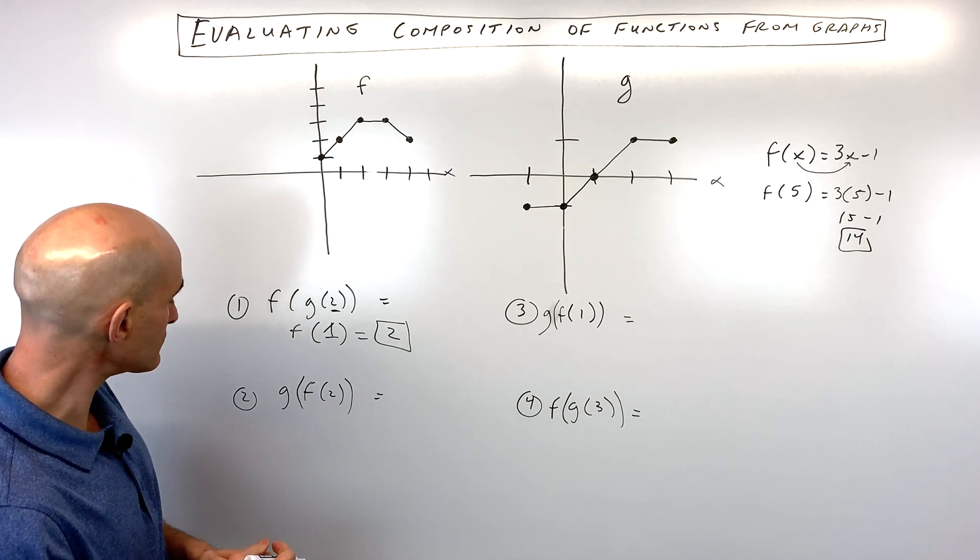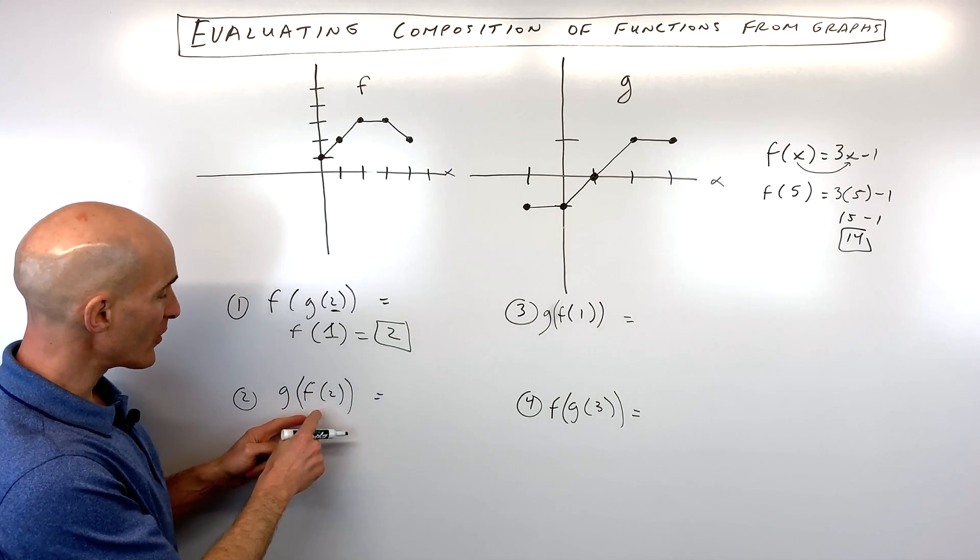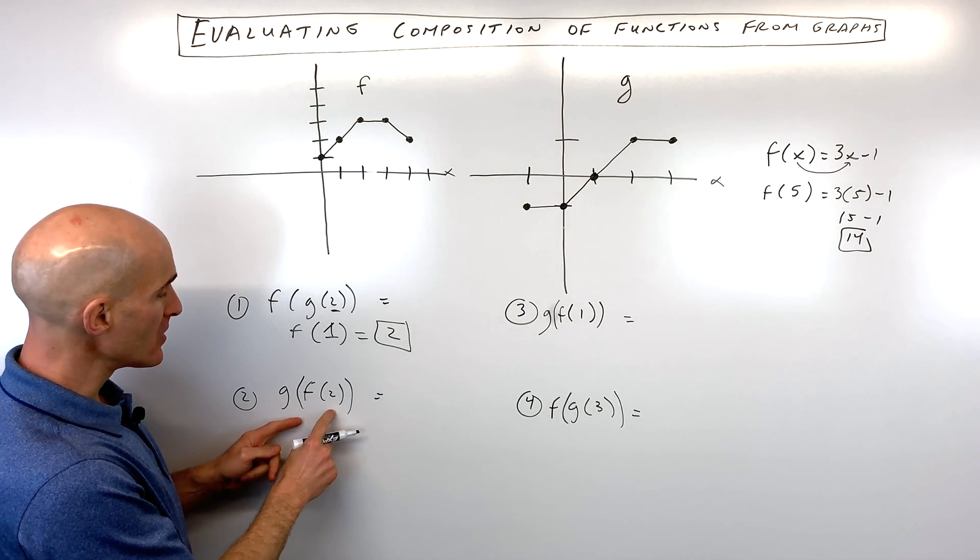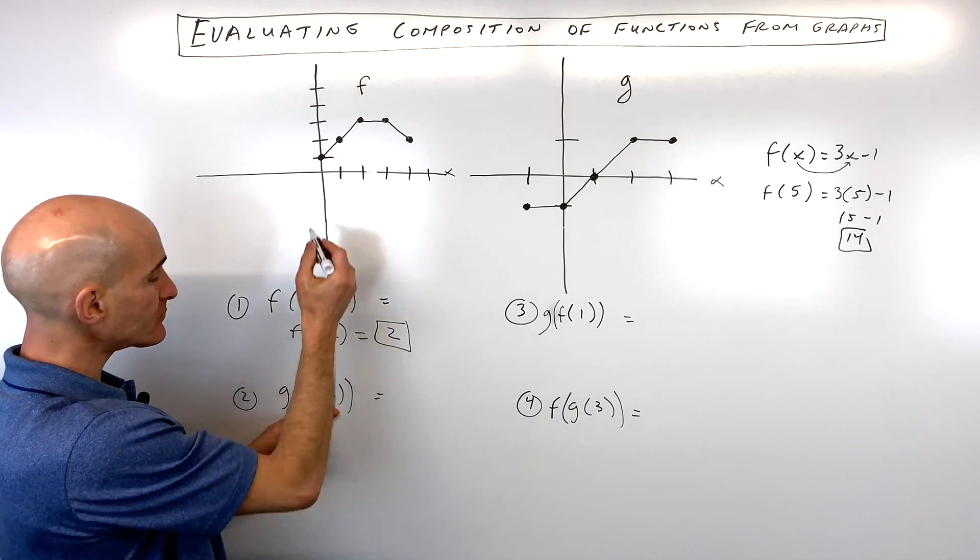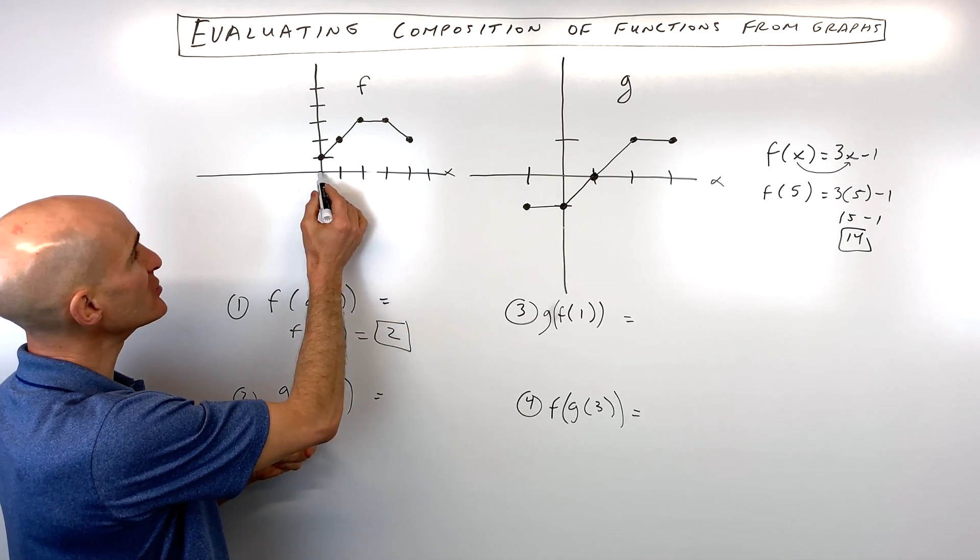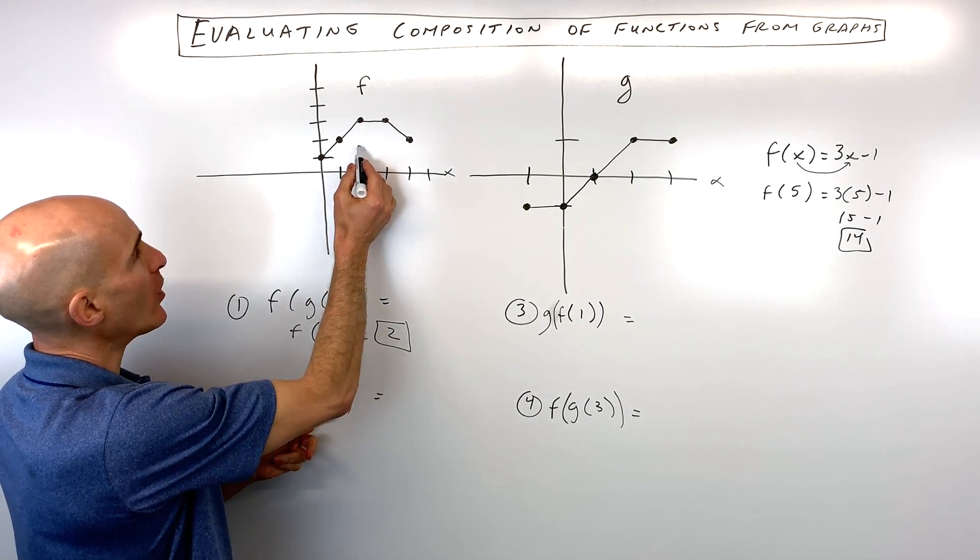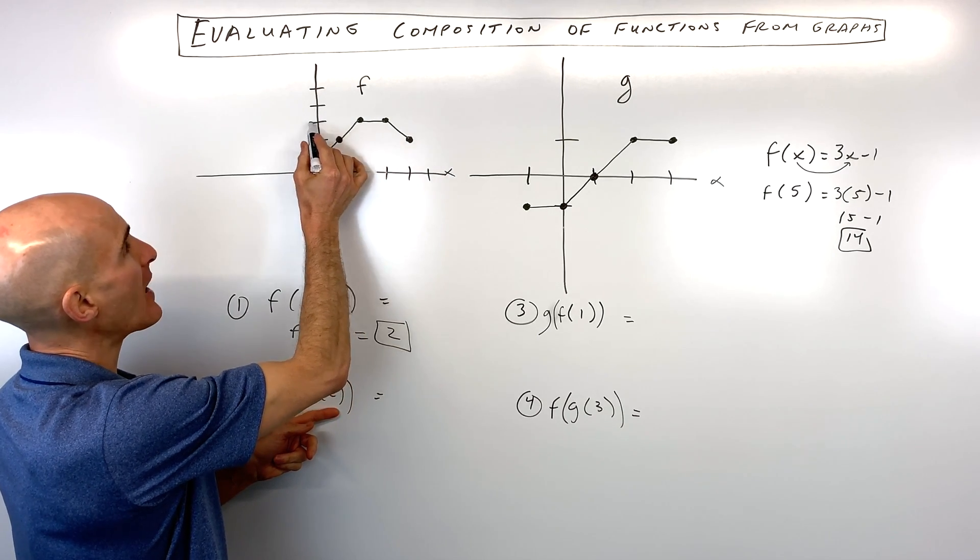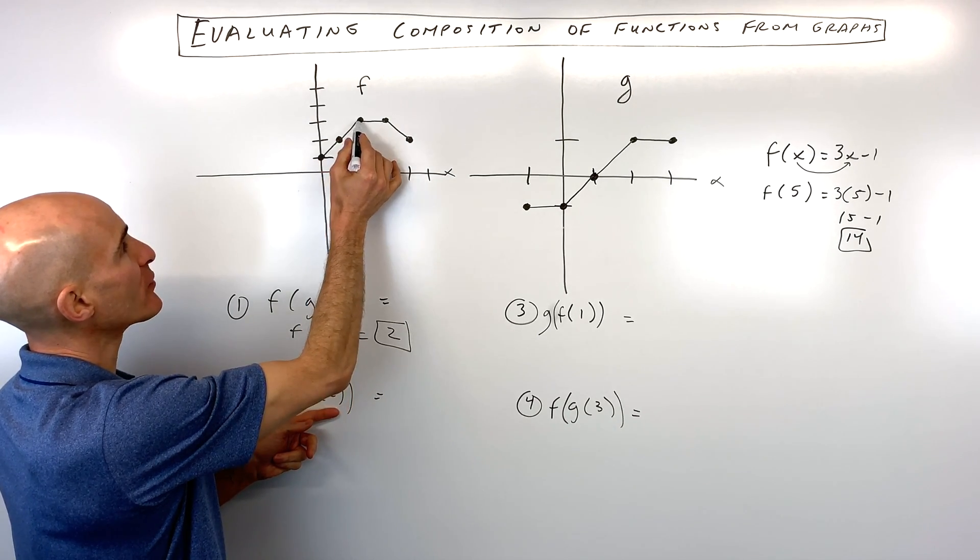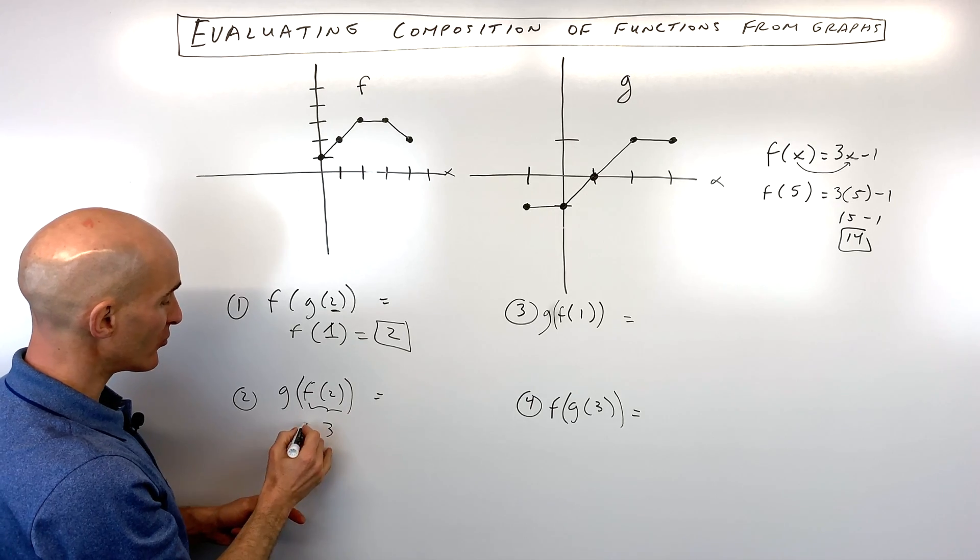Let's do another example. So for example 2 here, we have g of f of 2. So we start on the inside. We go to our f function. We say when x is equal to 2, 1, 2. We go up to the graph. We can see that the y value is 1, 2, 3. So f of 2 is actually equal to 3.